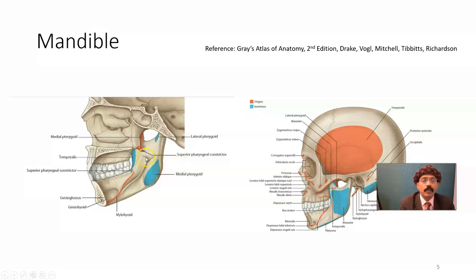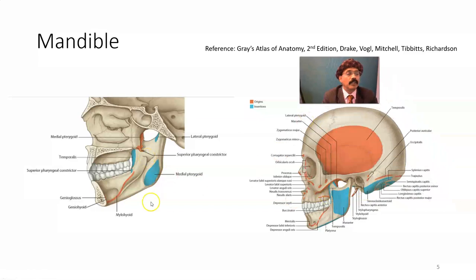The lingula area is adjacent to the mandibular foramen. The mylohyoid groove is also visible here. The lingula is the site of attachment of the sphenomandibular ligament. The posterior border of the ramus also relates to the sphenomandibular ligament. From the upper genial spine originates the genioglossus; from the lower genial spine originates the geniohyoid muscle.